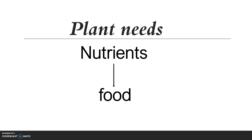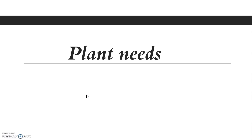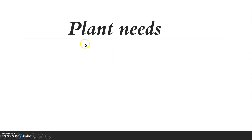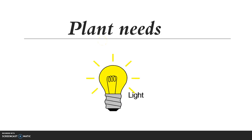Plants need nutrients, but unlike other organisms like animals and humans, plants can make their own food. How? By using sunlight. The green parts of plants, like the leaves, take in sunlight and use it to make their own food.